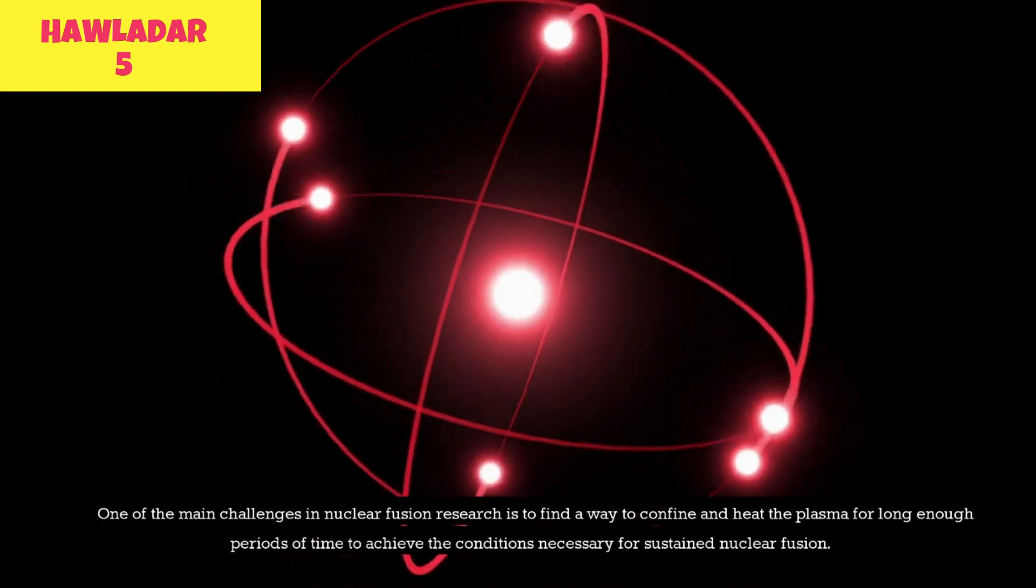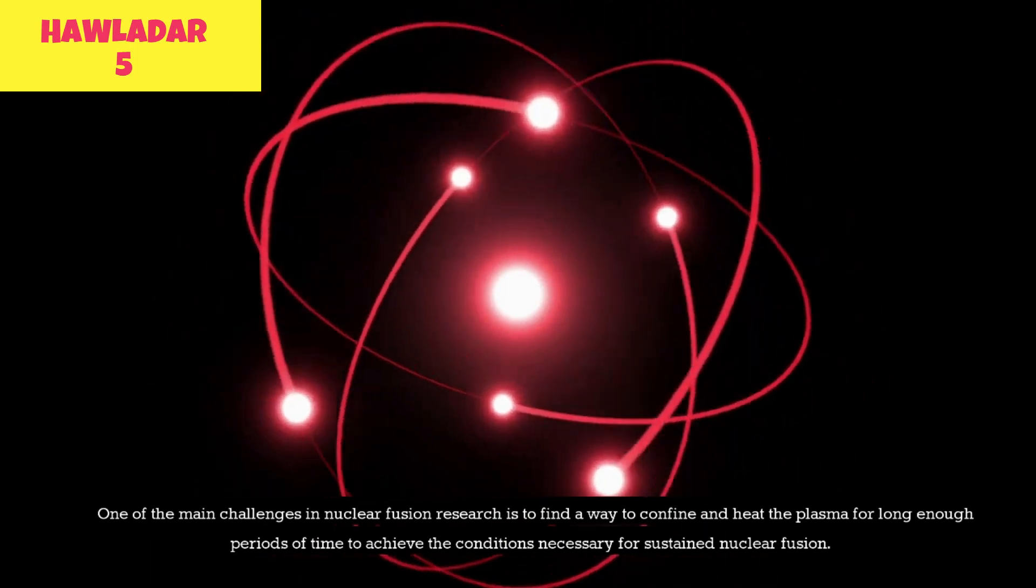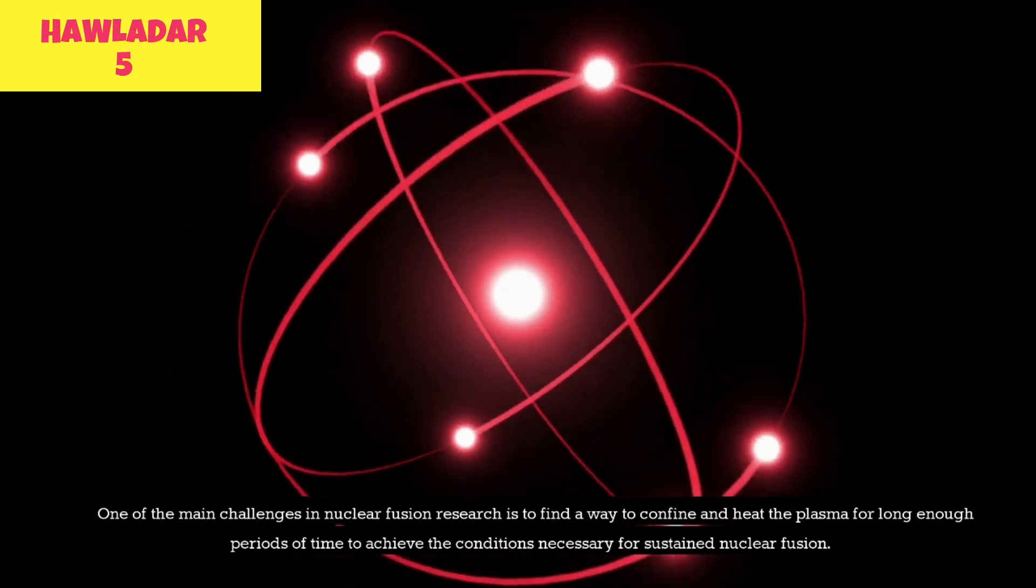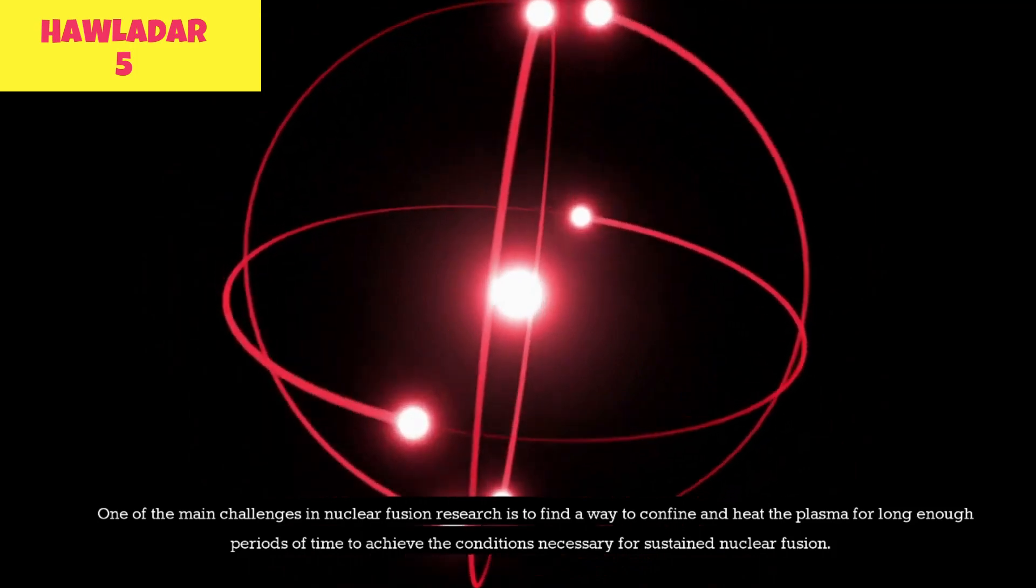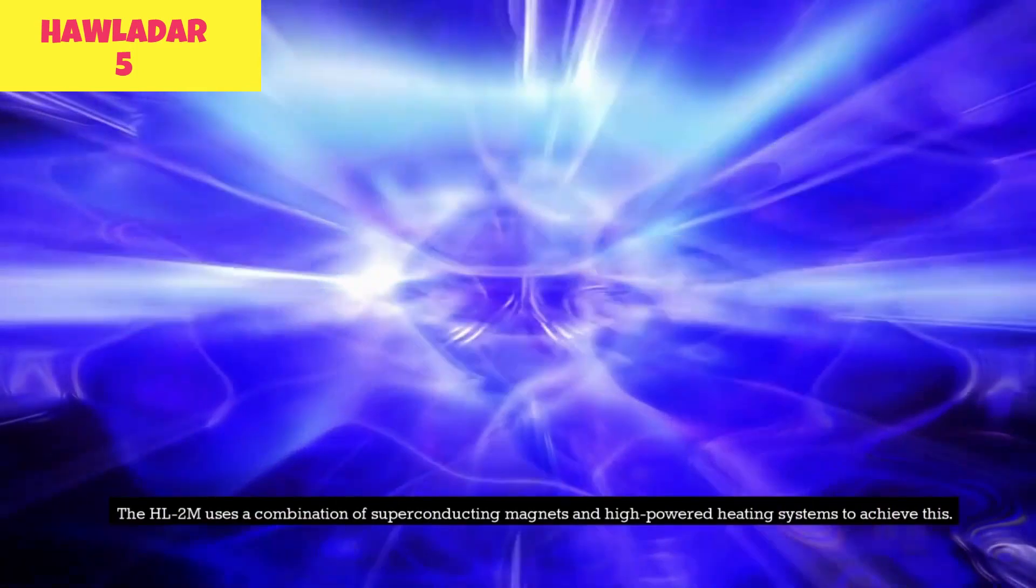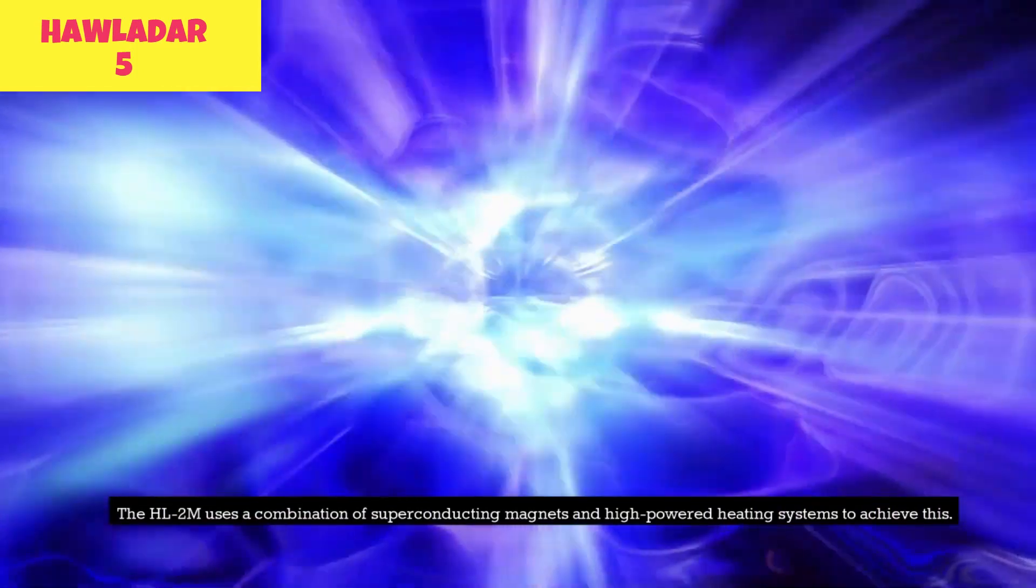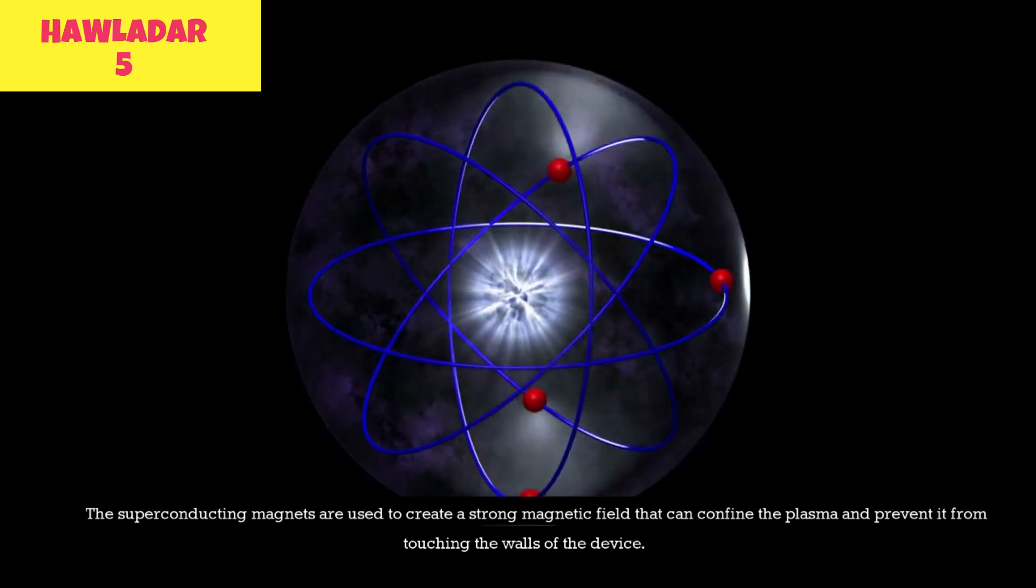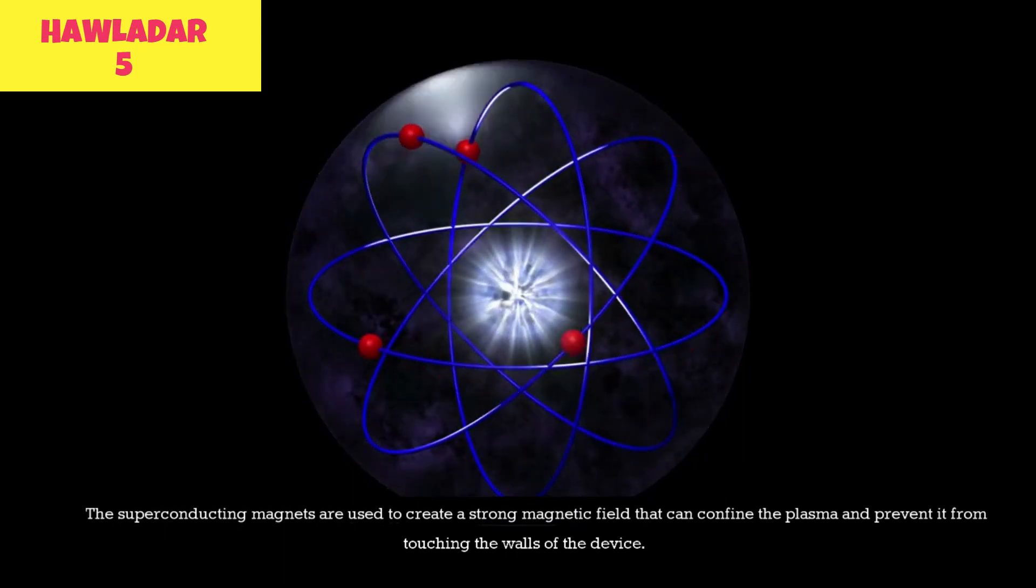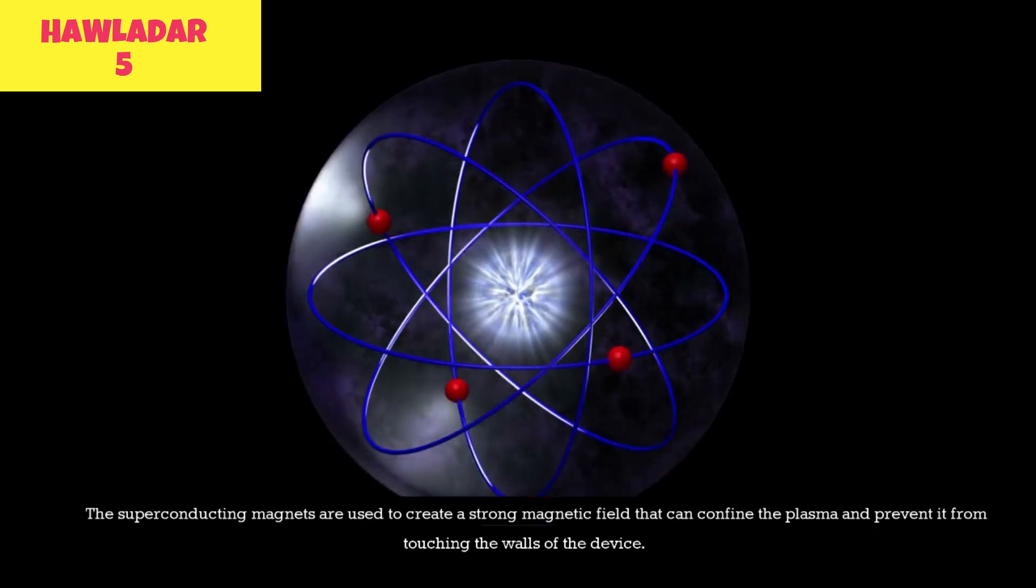One of the main challenges in nuclear fusion research is to find a way to confine and heat the plasma for long enough periods of time to achieve the conditions necessary for sustained nuclear fusion. The HL2M uses a combination of superconducting magnets and high-powered heating systems to achieve this. The superconducting magnets are used to create a strong magnetic field that can confine the plasma and prevent it from touching the walls of the device.